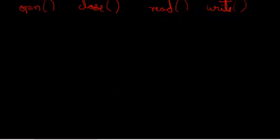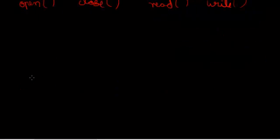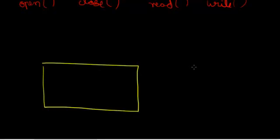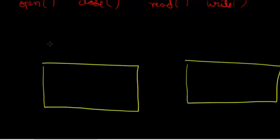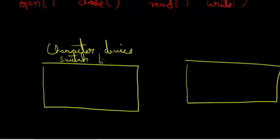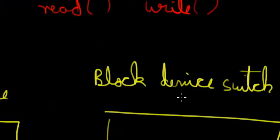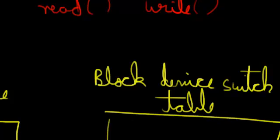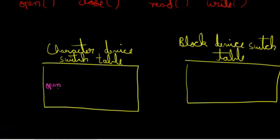Looking at the character file type, the appropriate switch table is chosen. There is a table maintained for character devices and a table maintained for block devices. What these tables contain are addresses to kernel driver functions — these are the actual drivers. So you have open, close, read, write, and ioctl as entries in the character device switch table.